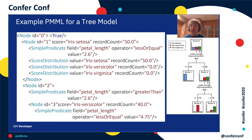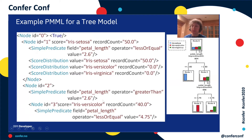Here is another example PMML, this one for a decision tree model also built on the same iris data. In this case, the data dictionary would be exactly the same. A transformation dictionary is not needed here. The tree model itself has nodes, and each node describes a node in the tree — children nodes are inside the parent node. Inside each node there is a predicate, which is always true for the root node. For node with ID 1, the predicate is that petal length is less than or equal to 0.6, and for the other child it is greater than 2.6. Inside the second node there are child nodes again. So PMML basically describes your model very well, and once you know the whole model, you can figure out how to score it.